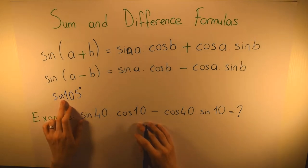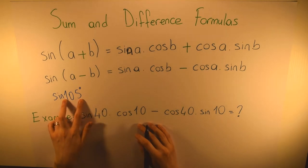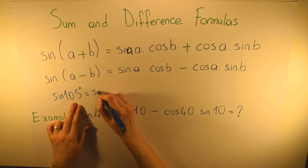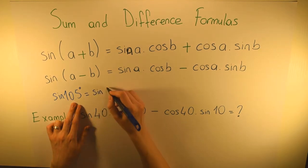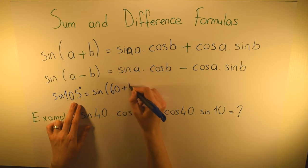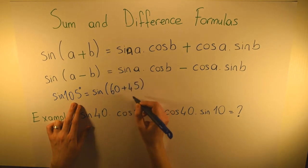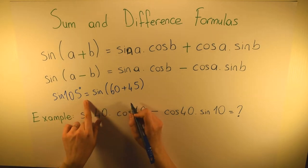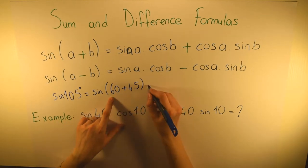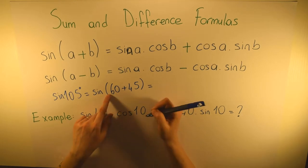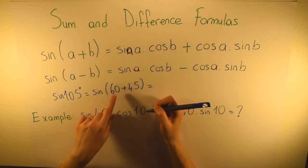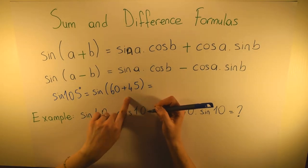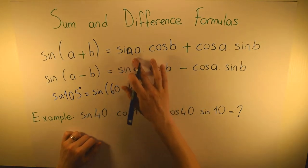We can write sine 105 degrees as sine(60 + 45), because 60 plus 45 equals 105. Now everything is much easier because I know the sine and cosine values of both 60 and 45 degrees, so I can easily apply the formula.